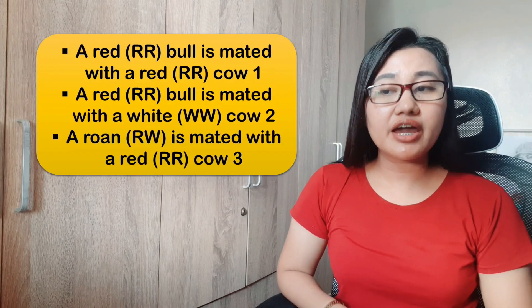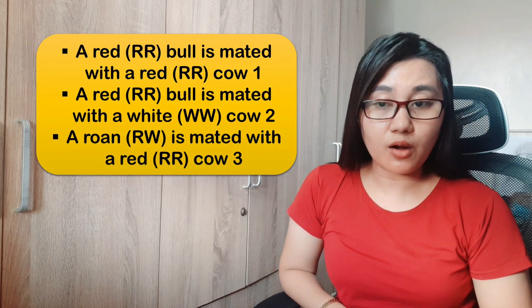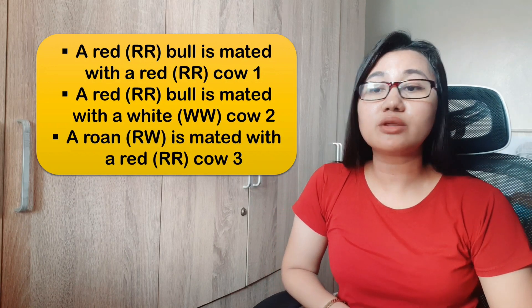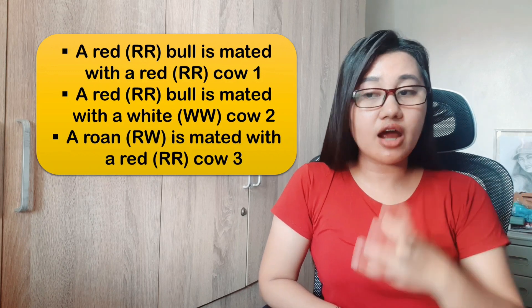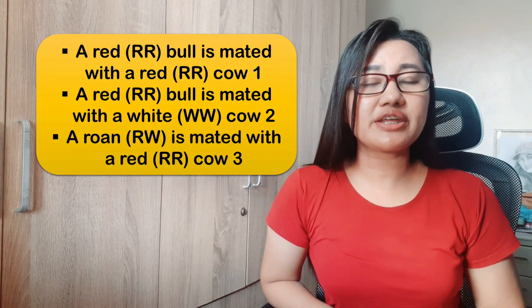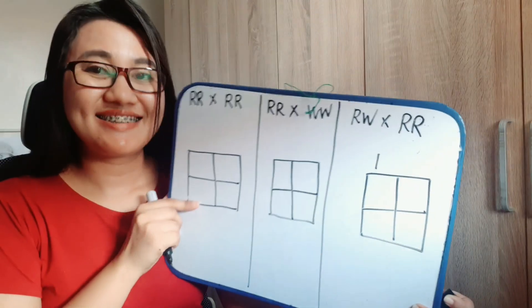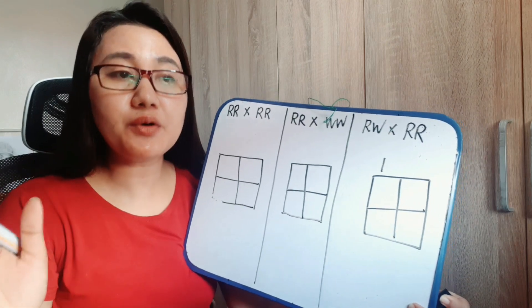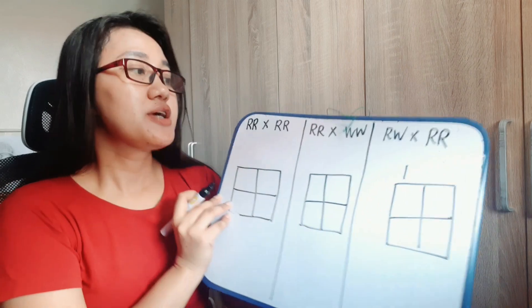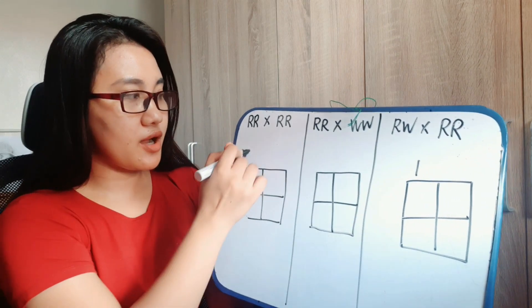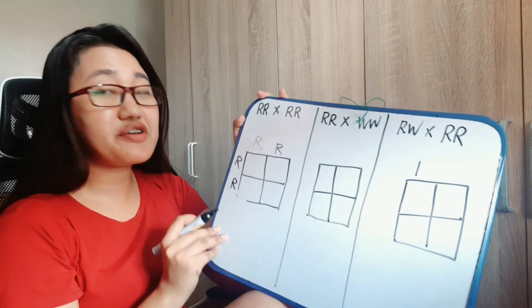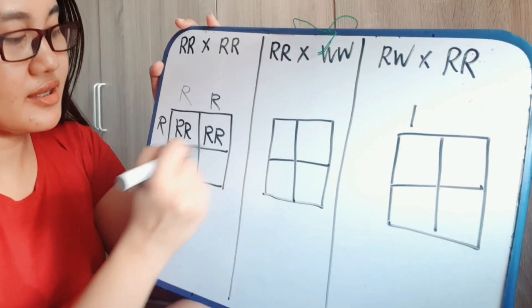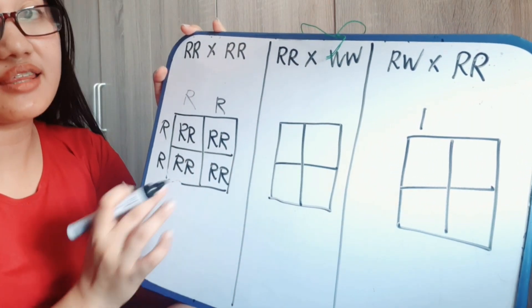You have to determine the possible traits of the calves. First, a red bull (R) is mated with a red cow. Second, a red bull is mated with a white cow. Third, a roan cow (RW) is mated with a red cow. We will illustrate our answers using the Punnett square. For problem one — red bull and red cow — the Punnett square shows R, R, R, R, so 100% of the offspring will be red.